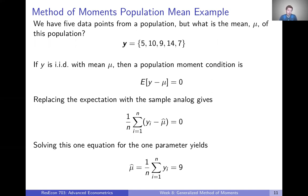Of course, we don't observe the population — we only observe a sample. What we do with the method of moments estimator is replace that population expectation in our moment condition with its sample analog, the sample mean. Instead of thinking about the population in expectation, we look at our sample on average. If something is supposed to hold in expectation in the population, if we take a random sample from that population, the same thing should hold on average. Then we define our method of moments estimator as the parameter that solves that equation or system of equations.